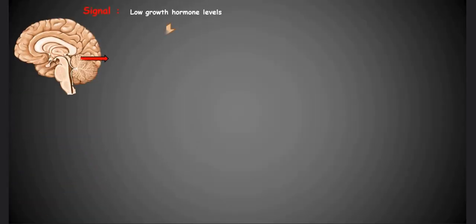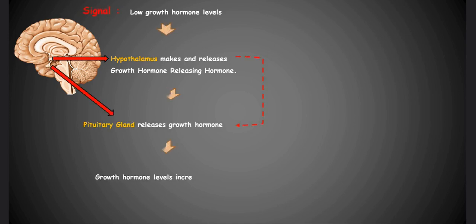The release of growth hormone is controlled by two other hormones that are released from the hypothalamus or part of the brain. The first hormone is called growth hormone releasing hormone, which stimulates the pituitary gland to release growth hormone, and the second hormone is called somatostatin, which inhibits growth hormone release.